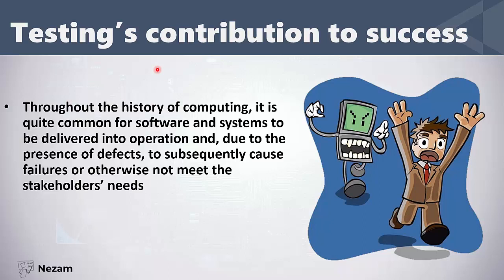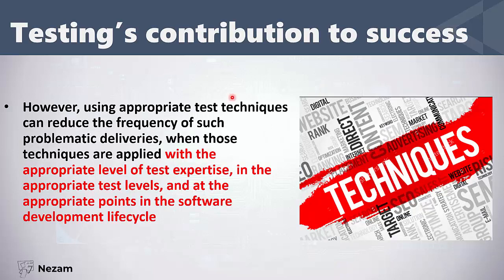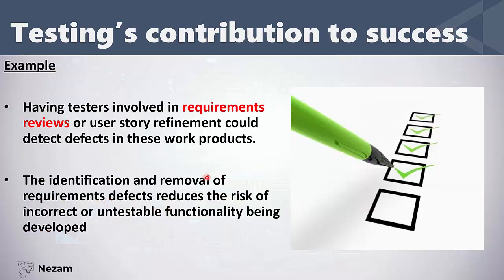Throughout the history of computing, software systems are delivered into operation but because of defects and failures — because the software doesn't do what it is intended to do — this makes stakeholders and clients unhappy. This is why we apply test techniques to reduce the frequency of these problems by applying appropriate test techniques with the appropriate level of expertise at the right test levels and points in the software development life cycle.